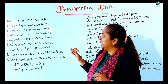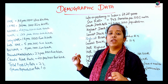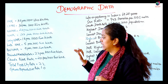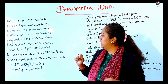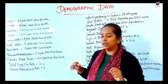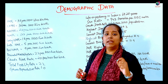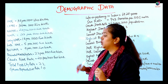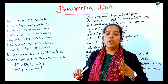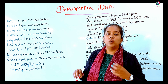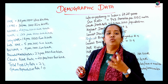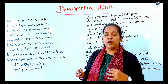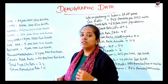Perinatal Mortality Rate is 22 per 1,000 live births. Crude Birth Rate is 20 per 1,000 live births. Total Fertility Rate is 2.2. Gross Reproductive Rate — the ability to reproduce a child — is 1.0.